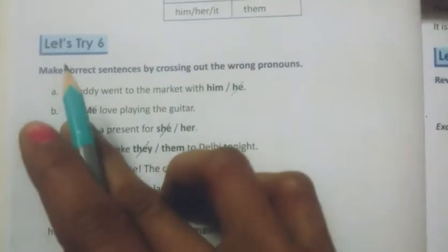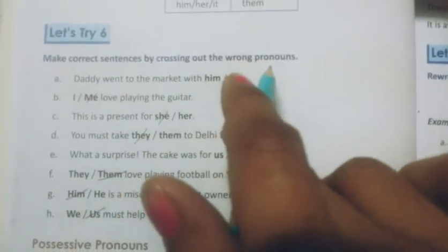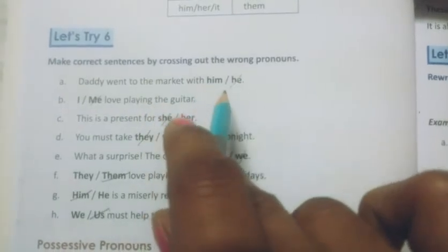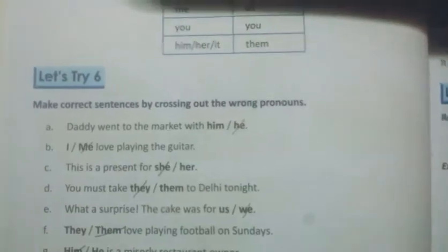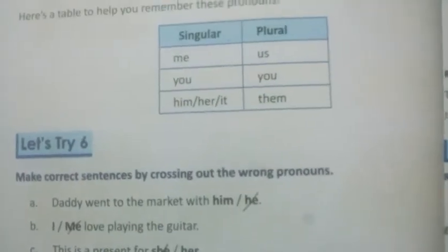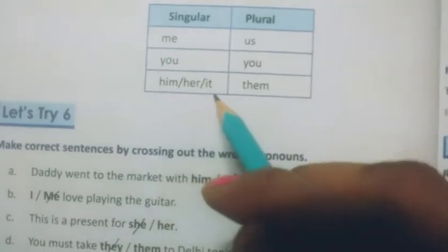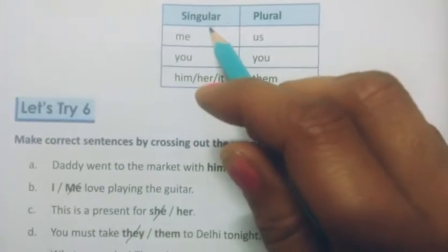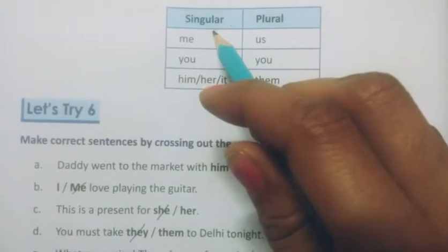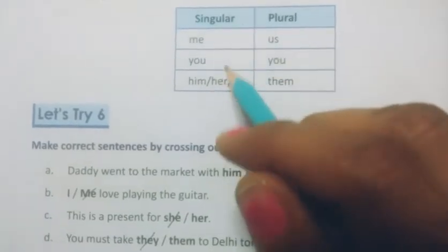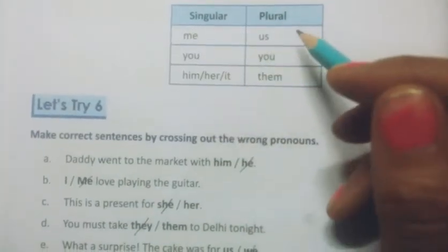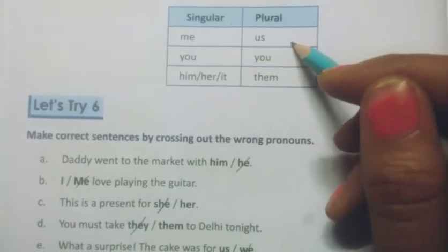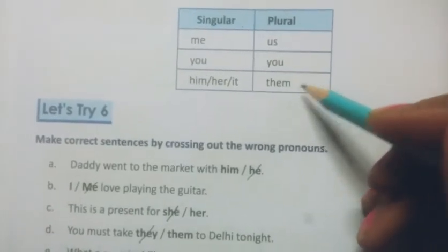Next exercise: Let's Try 6. Make correct sentences by crossing out the wrong pronouns. Pronouns are given; you have to cross out the wrong pronoun and write the correct one. Let's see the table once more. Me, you, him, her, and it are the singular object pronouns. If we have a singular subject at the place of object, we use these pronouns. And if we have a plural subject, then we use us, you, and them.